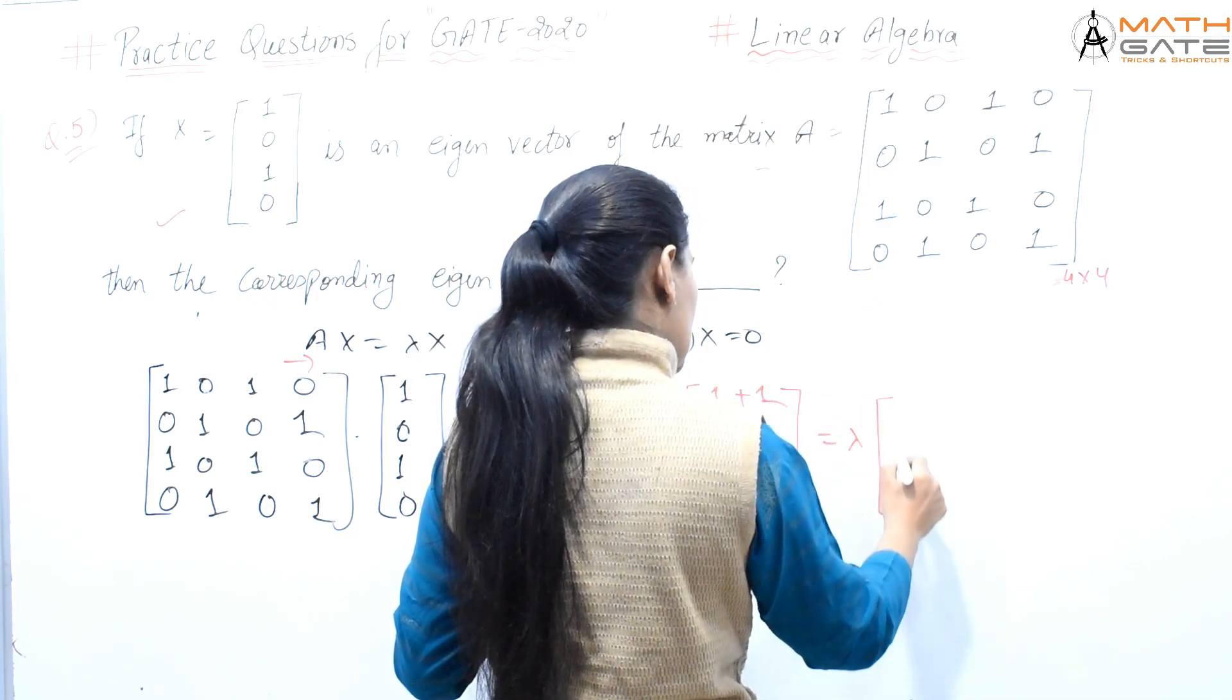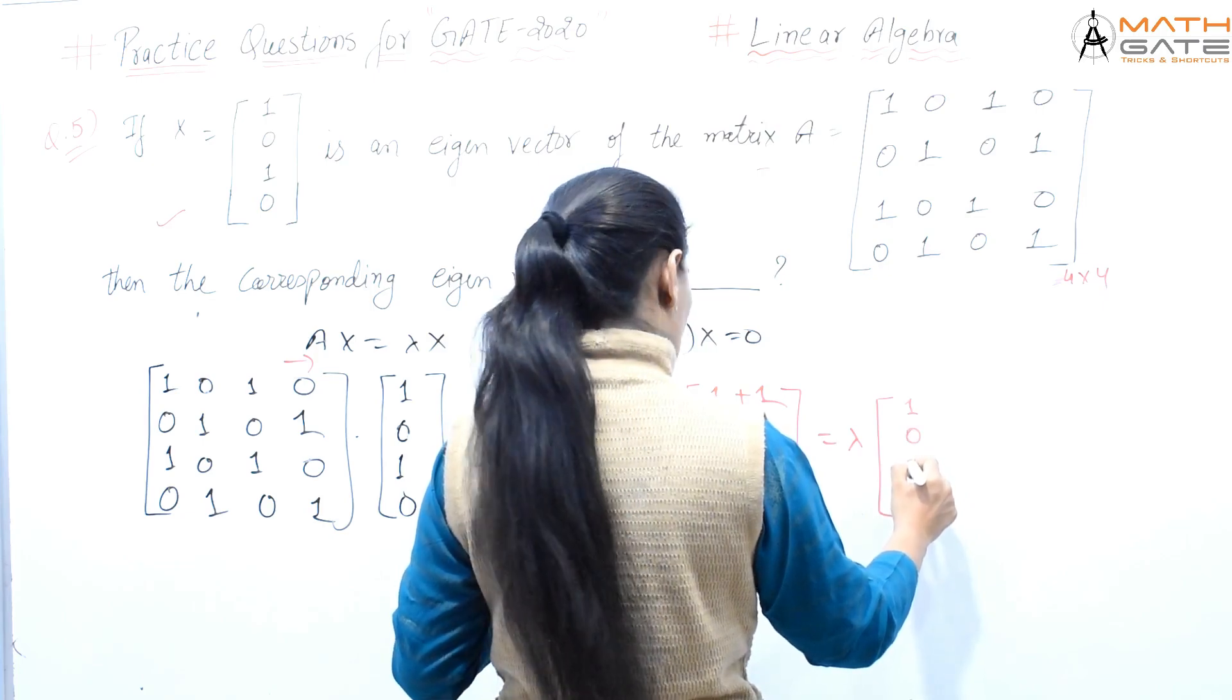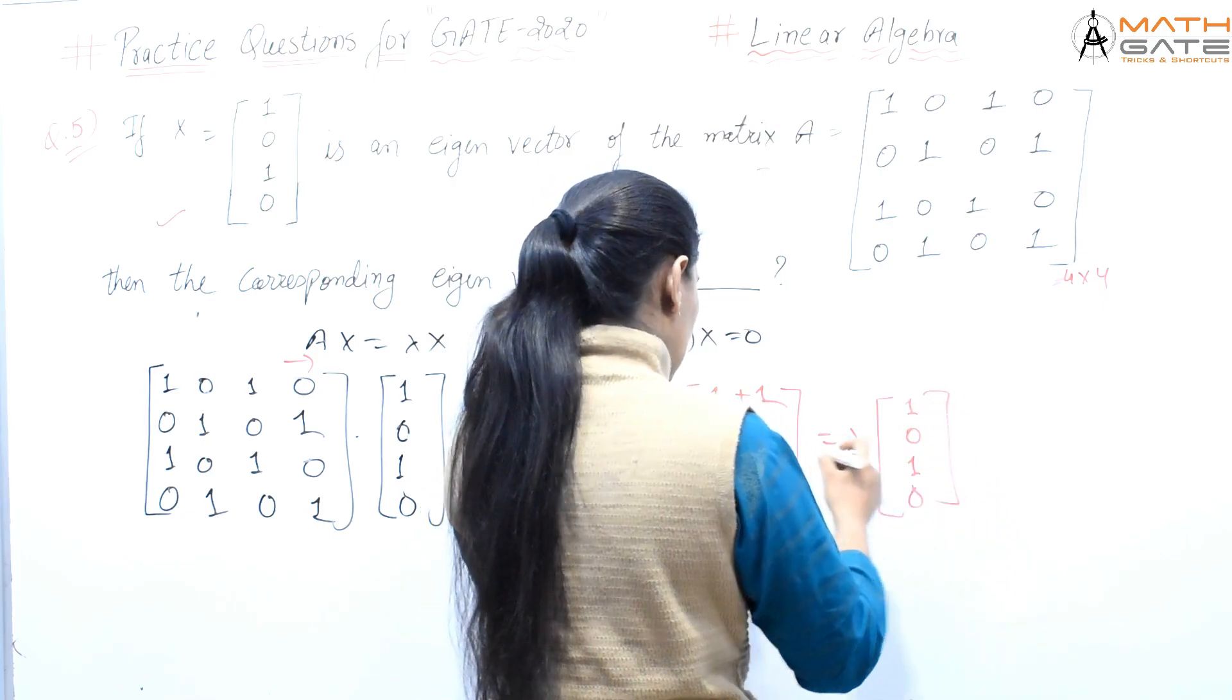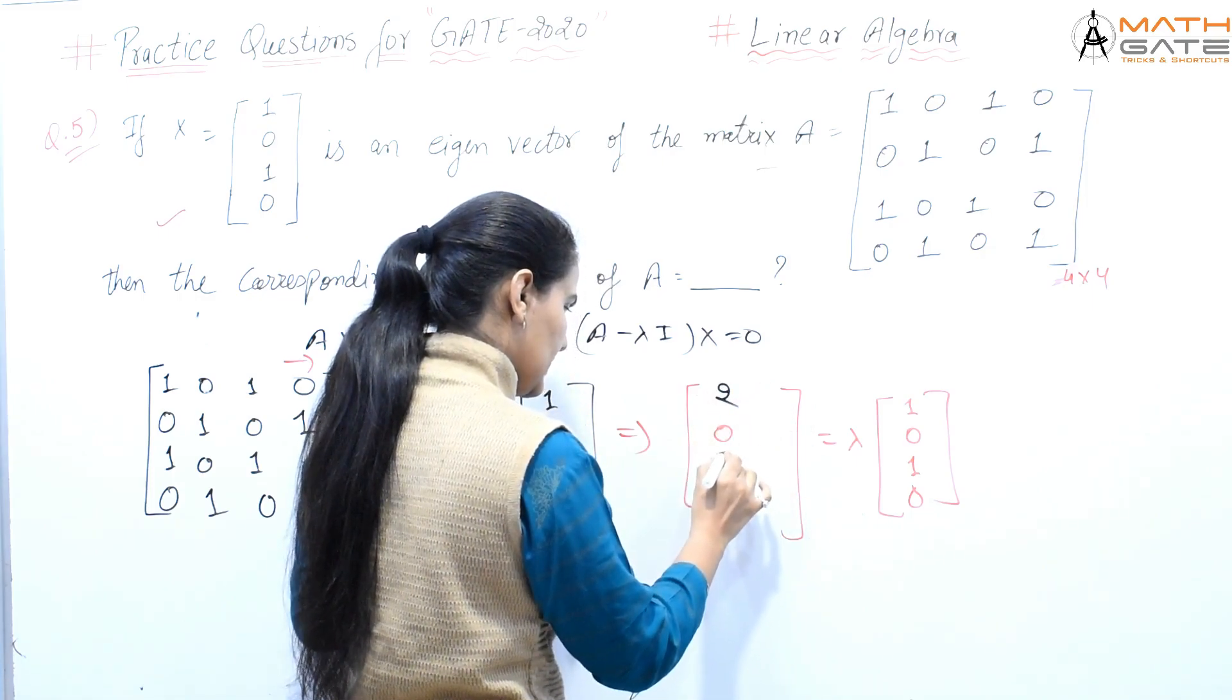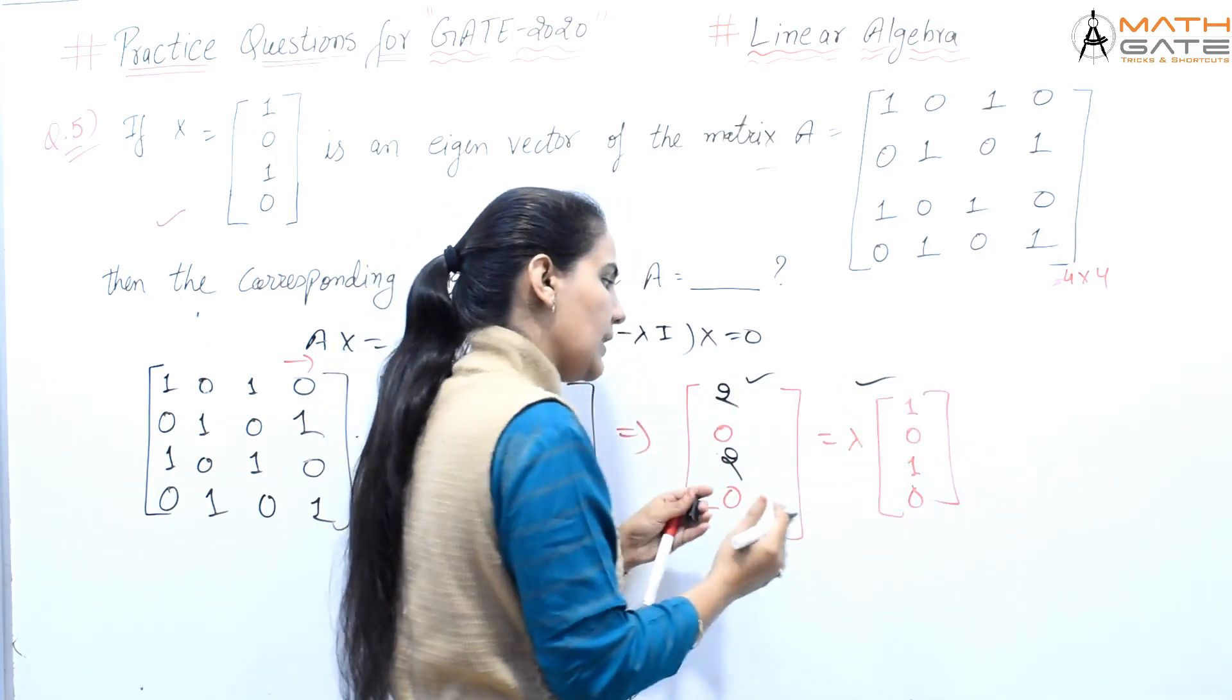Similarly, the fourth row gives 0. So this is A and this is x - we've already multiplied x. It equals lambda into x, where x is [1,0,1,0]. When we solve this, 1 plus 1 gives us 2, and here also 1 plus 1 gives us 2. When can this be equal? When we take 2 out from this side.